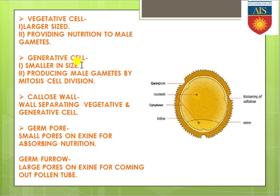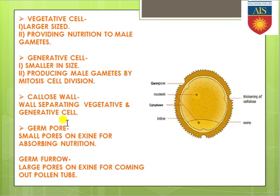Next there is a generative cell — these two specific cells are actually present in the cytoplasm of the pollen grain. Then there is a callose wall, and then germ pore and germ furrow — two small pore-like structures and one bigger pore-like structure present on the surface of the exine.